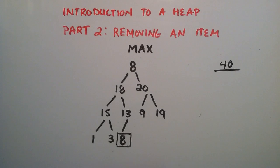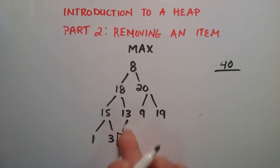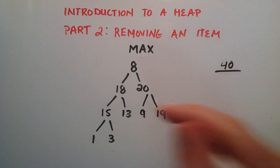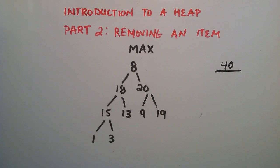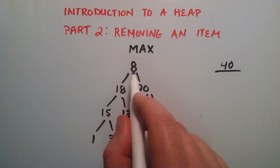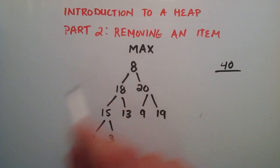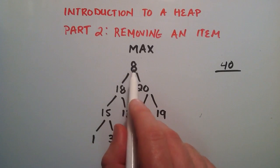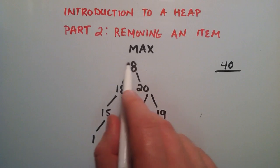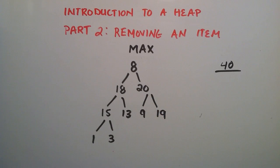So now that we've deleted that leaf or that node, we basically have the right structure for a heap, but now we do not have the right properties for our max heap. Now we have 8, which is less than 18, it's less than 20, and our root is supposed to be the biggest number. So in order to fix that, to make this back into a heap again,